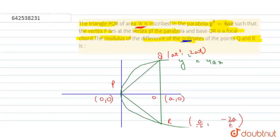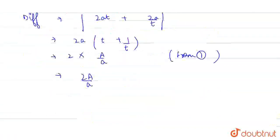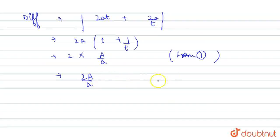Let us check which option is correct. The modulus of the difference of ordinates of points Q and R is 2A/A. This is our answer.